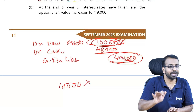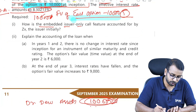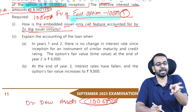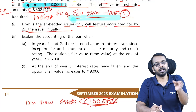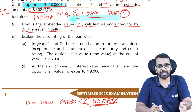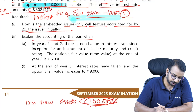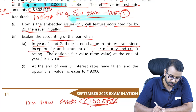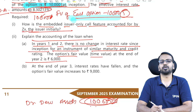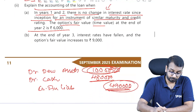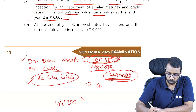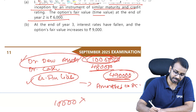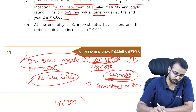Initially, we will recognize the liability at 4,90,000. How is the embedded issuer-only call feature accounted for by ZX initially? The conditions for accounting for them as a single contract are not met — we will separate them, account for the derivative asset separately and the loan liability separately. The financial liability will follow the amortized cost method. The derivative asset will be fair valued — originally at 10,000.